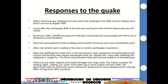In terms of responses: water, electricity, gas, and telephone services were fully working by July 1995 — remarkably quick. The railways were back in service by August 1995. A year after the earthquake, 80% of the port was working, but the Hanshin Expressway was still closed. Four years later, they managed to build 134,000 housing units, but some people were still in temporary accommodation. They passed new laws to make buildings and transport structures even more earthquake-proof, and more instruments were installed in the area to monitor earthquake movements.